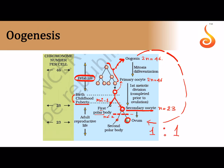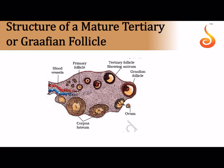In spermatogenesis the ratio was 1:4, but in oogenesis it is 1:1 — one oogonium yields one ovum. In a section of the ovary, primary and secondary oocytes are surrounded by nutritive cells called follicle cells, forming a primary follicle. The primary follicle grows into a tertiary follicle, then a secondary follicle. The cell inside the Graafian follicle has completed meiosis I, sitting with the first polar body, and then the Graafian follicle ruptures and the secondary oocyte is released.